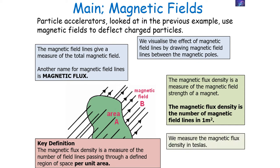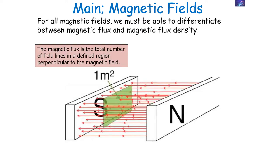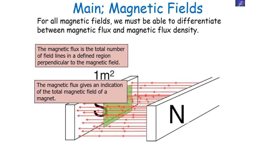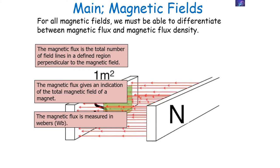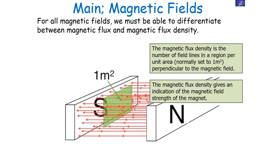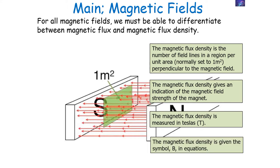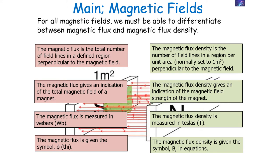We measure magnetic flux density in Teslas. Since magnetic flux density is the flux per unit area, one Tesla is equal to one Weber per square metre. Magnetic flux is the total number of field lines in a defined region perpendicular to the magnetic field, giving an indication of the total magnetic field of a magnet, measured in Wb (Webers), symbol phi. Magnetic flux density is the number of field lines per unit area, normally one metre squared perpendicular to the magnetic field, indicating the magnetic field strength, measured in Teslas (T), symbol B.